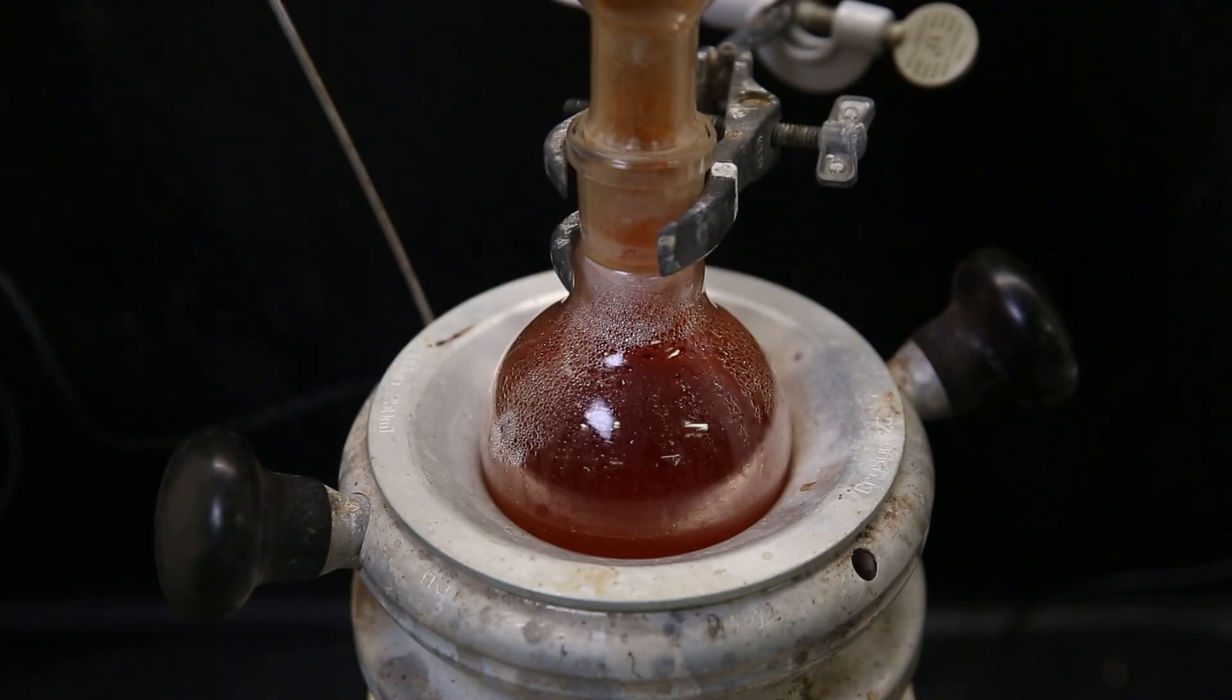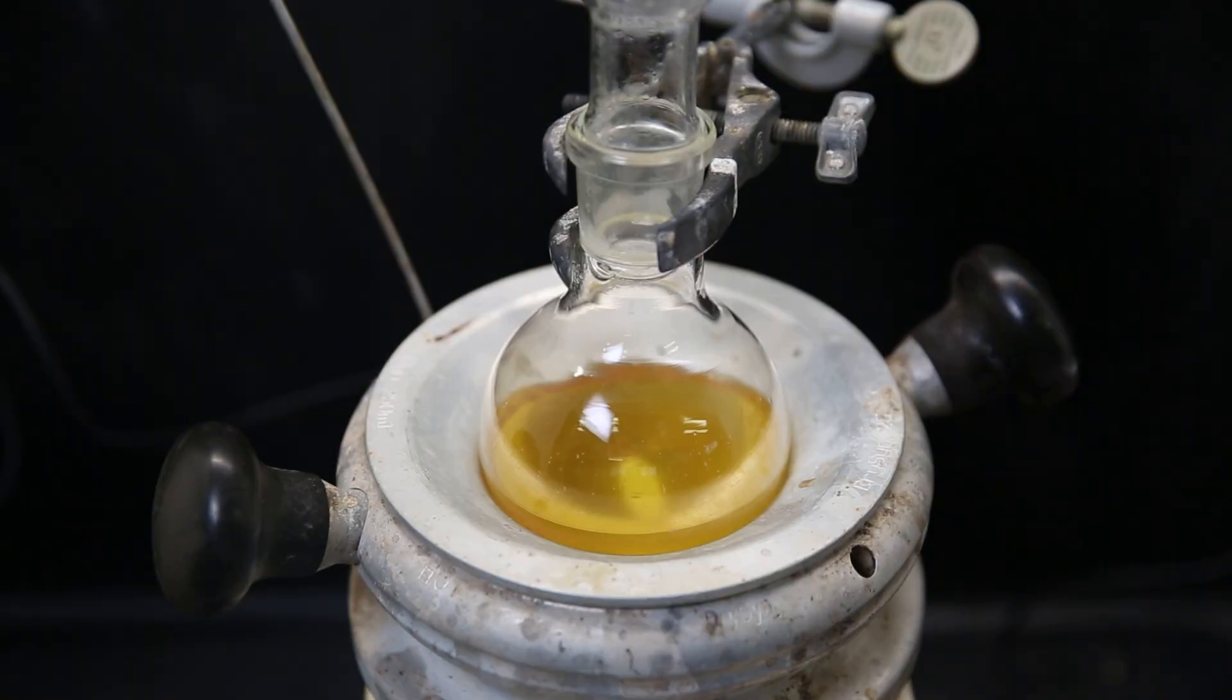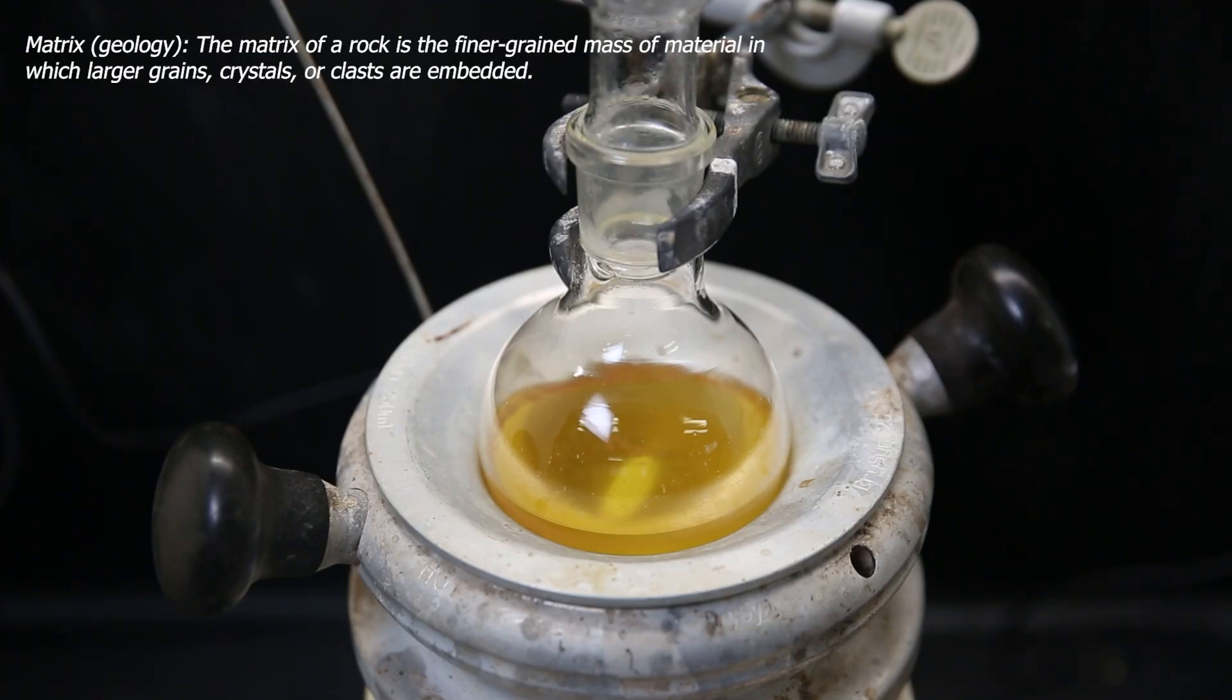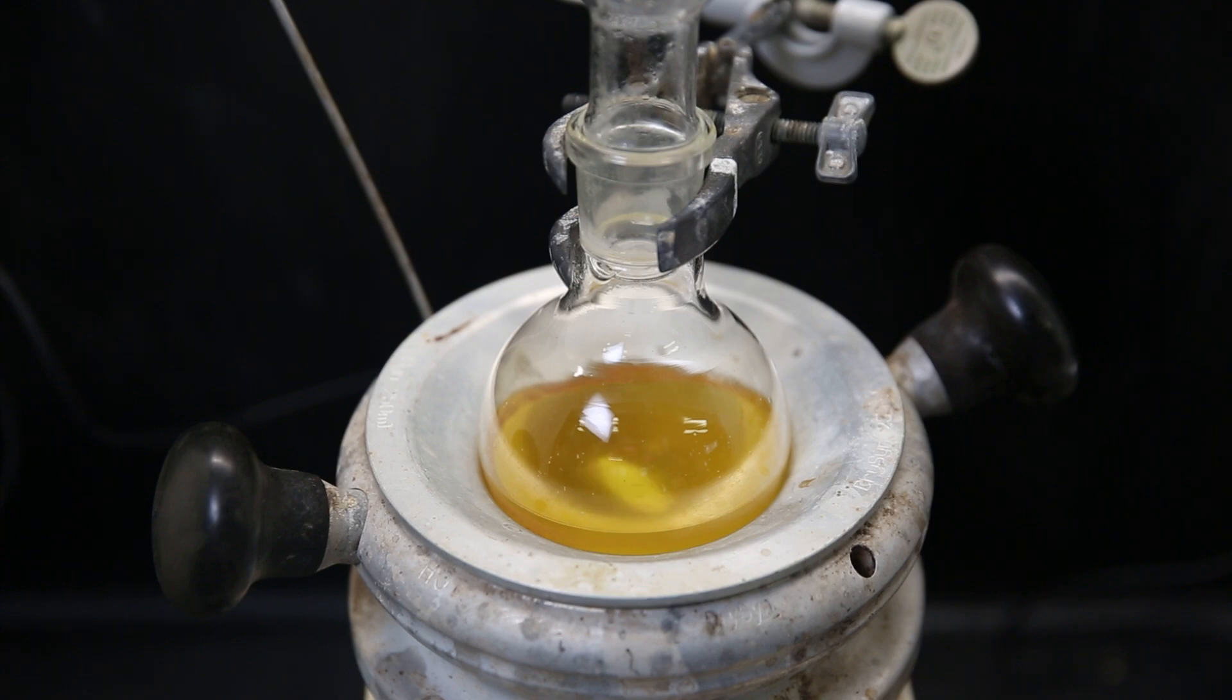I leave it to reflux overnight and when I come back the reaction is finished. And the rock has disappeared. No more gas is evolving from the mixture and it seems it has all reacted to form soluble yellow uranyl nitrate. There are still some solid bits present in the mixture which are probably just common silicate minerals from the rock matrix which didn't react with the nitric acid. Since I don't want them in there, I will have to remove them. So I remove the flask from heat and let it cool down slightly.